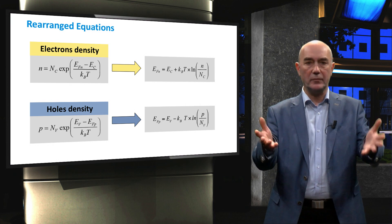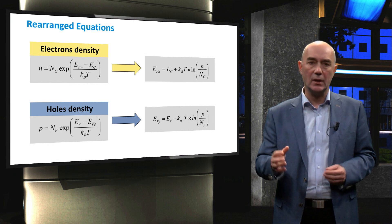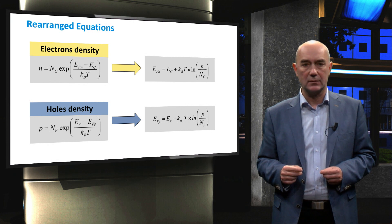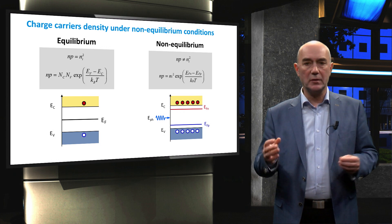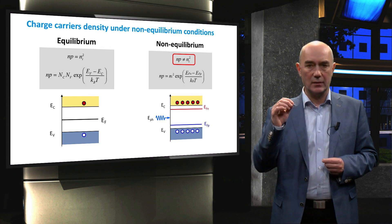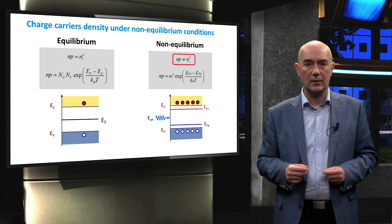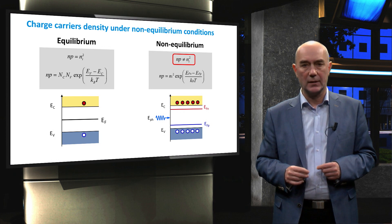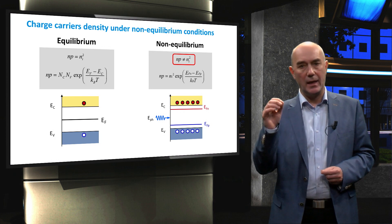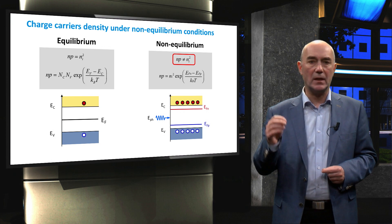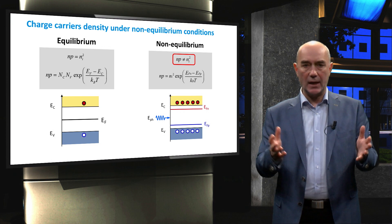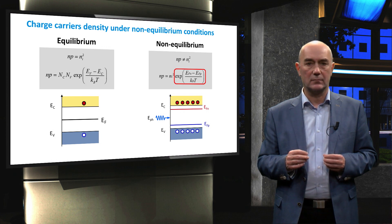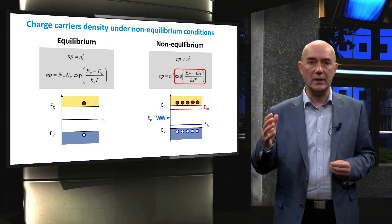I invite you to solve these equations for our example of silicon at room temperature with an injection level of 10¹⁵ charge carriers per cubic centimeter. It is also important to mention that in the non-equilibrium state, the law of mass action is no longer valid. The product N×P is no longer equal to Ni squared, and cannot be determined solely as a function of band gap energy. Instead, we also have to take into account the difference between the quasi-Fermi level energies, which results in an additional exponential term.